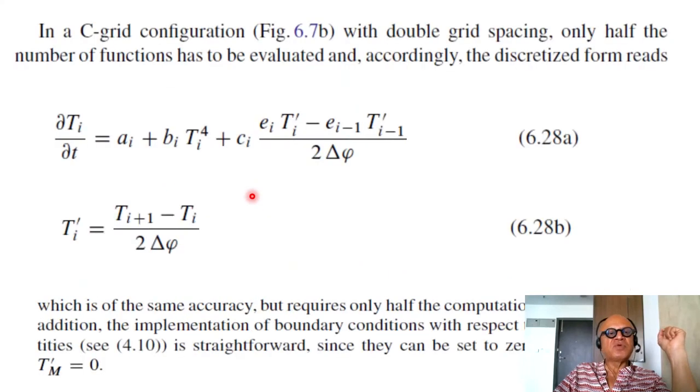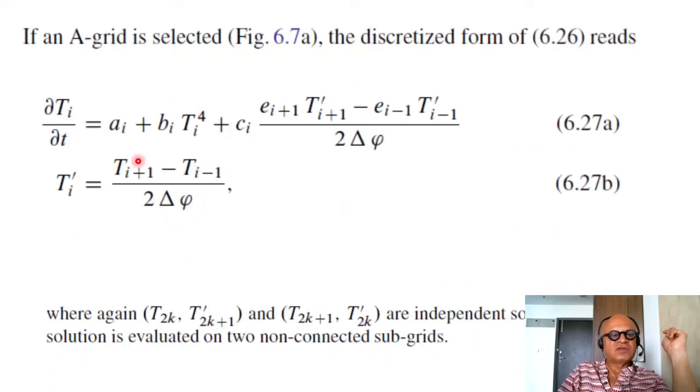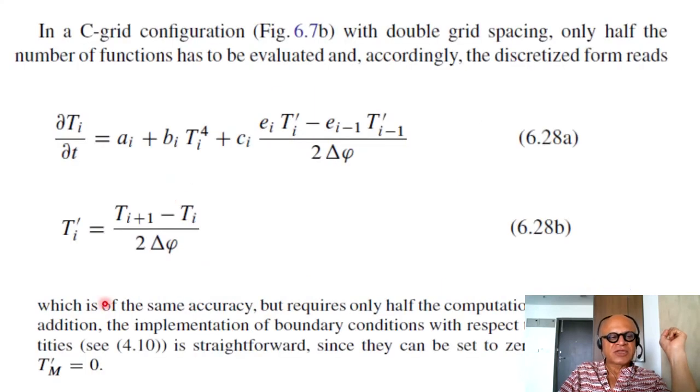Whereas if you picked a C grid for the one-dimensional energy balance model the same equation then you stagger them. So you have increased the grid spacing, reduced the number of points at which derivatives are being computed and so on. In a C grid configuration with double grid spacing only half the number of functions has to be evaluated and the accuracy remains the same. You don't change the accuracy. Which is of the same accuracy but requires only half the computational resources. In addition the implementation of boundary conditions with respect to the flux quantities, the derivative t prime can be set to zero at the left boundary and t prime m can be set to zero at the right boundary naturally, so you get a better physical representation.